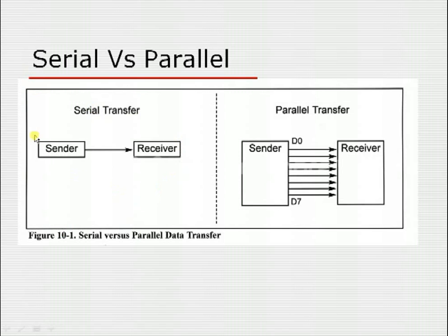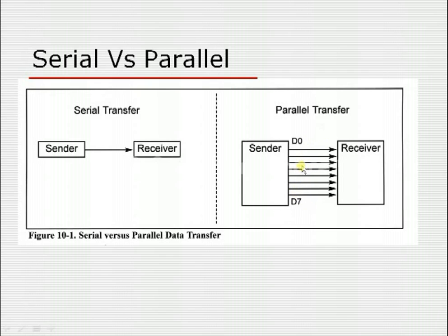Let us see how serial and parallel communication look. In serial communication, a sender and receiver are connected with one channel through which the sender sends data and the receiver receives data. In parallel communication, multiple channels connect sender and receiver, so multiple data bits are carried simultaneously. With eight channels, eight data bits are transferred at the same time.